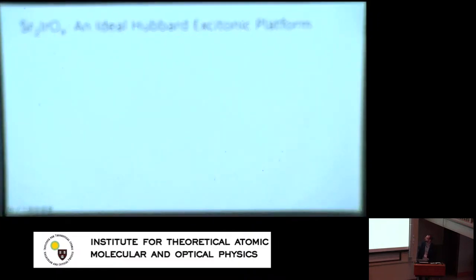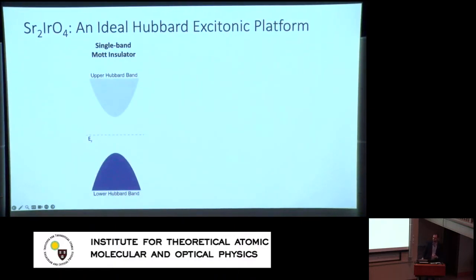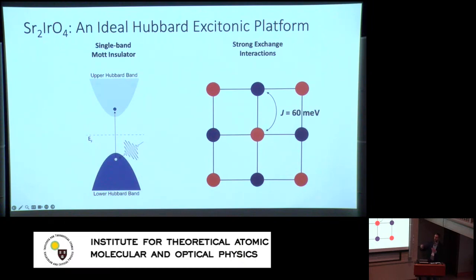We chose strontium iridate Sr₂IrO₄ for two reasons. First, it is a true single-band Mott insulator: there is a lower Hubbard band and an upper Hubbard band with no bands in between, so we don't need to make approximations to the single-band model. Second, it has strong exchange interactions — the exchange interaction J in this material is known to be 60 meV — so it should be very hospitable to magnetic string-binding mechanisms.